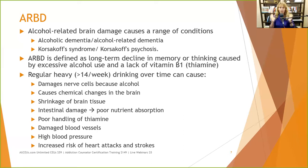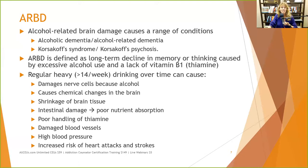Alcohol causes chemical changes in the brain — neurochemicals become dysregulated — and shrinkage of brain tissue. Intestinal damage leads to poor nutrient absorption and poor handling of thiamine. Damaged blood vessels get stiffer and thicker, causing high blood pressure. High blood pressure combined with damaged blood vessels increases your risk of heart attacks and strokes, which can cut off blood and oxygen to the brain.